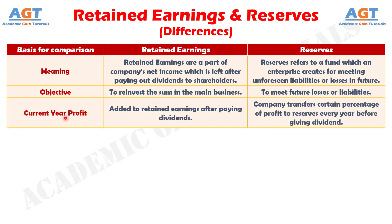Difference No. 3: We add a part of the current year's profit to retained earnings after paying dividends. In contrast, the firm transfers a certain percentage of the current year's profit to reserves every year before giving dividends.